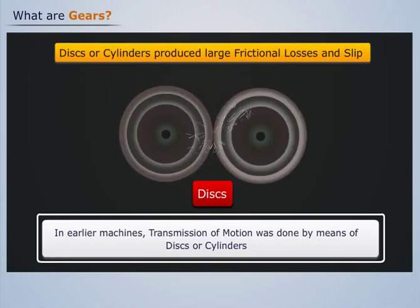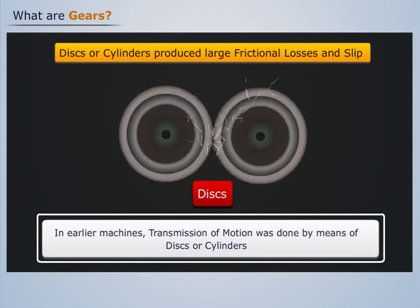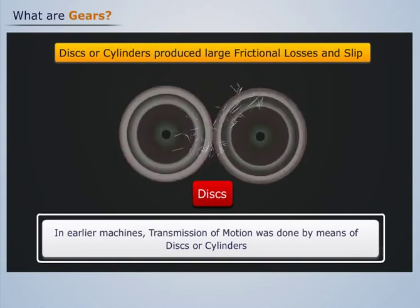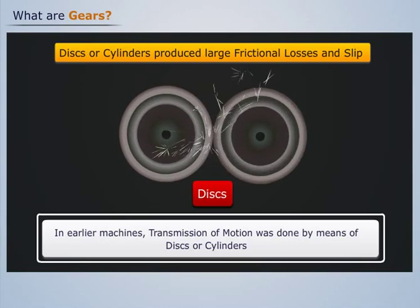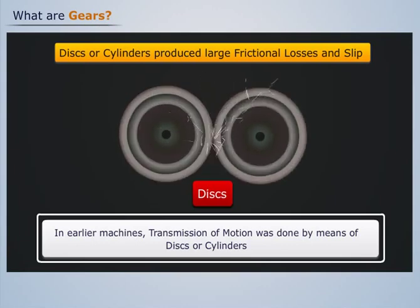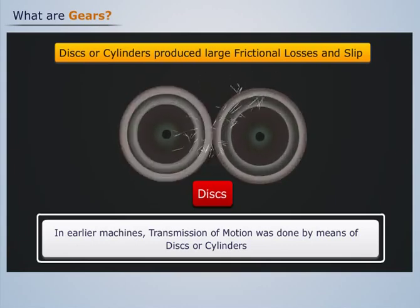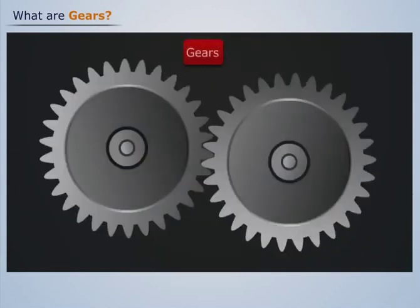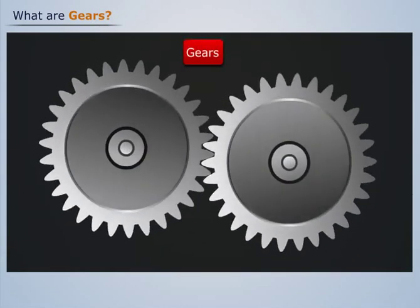The main disadvantage of discs and cylinders was that they produced large frictional losses and provided slip, so they were considered highly inefficient. In order to ensure transmission of motion with minimal losses and without any slip, discs were replaced with gears.